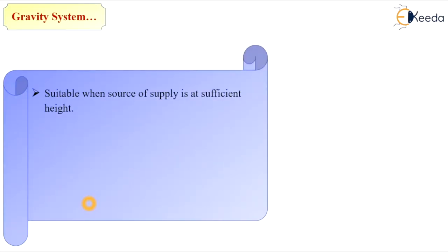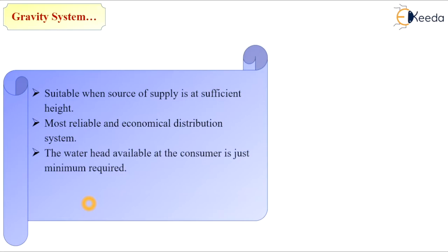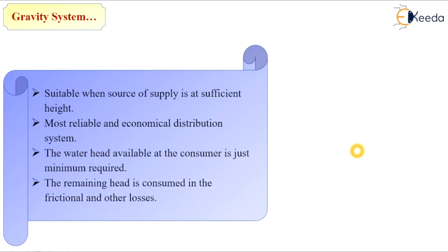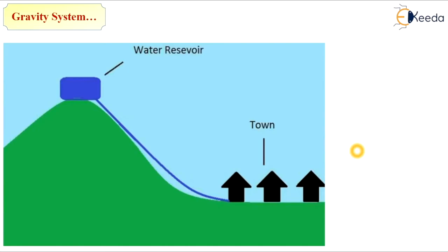The first method is the gravity system. It is suitable when the source of supply is at a sufficient height. It is the most reliable and economical distribution system. The water head available at the consumer end is just the minimum required, and the remaining head is consumed in frictional and other losses. This kind of system is provided when the water reservoir is located at a higher area and the town or city is located at a lower area. We pump the treated water into the elevated service reservoir, and it passes through the city through the distribution system by gravity flow.